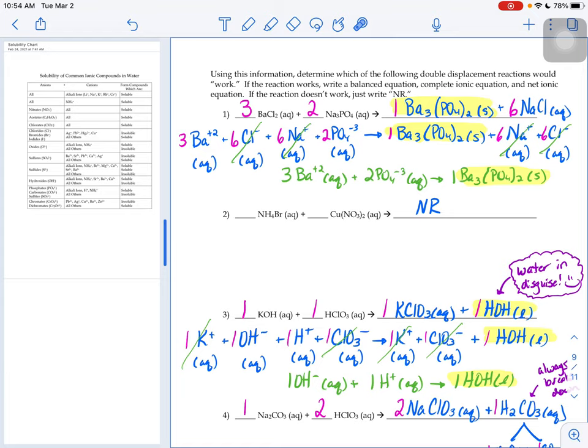In number one, our spectator ions are our chlorides and our sodiums. When you compare the chlorides on the left, 6Cl minus aqueous, to the ones on the right, 6Cl minus aqueous, they're exactly the same. Nothing happened to the chloride throughout the reaction. So our chloride's a spectator. For the same reason, our sodium ions are spectators as well. When we cancel out our spectators, the things that we have left are 3 barium ions and 2 phosphate ions that can come together to make our precipitate barium phosphate.